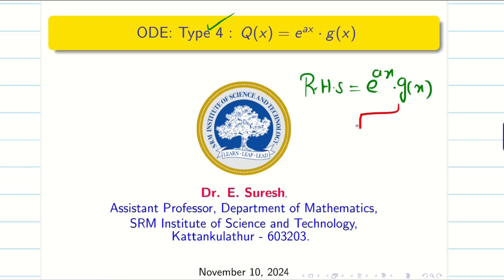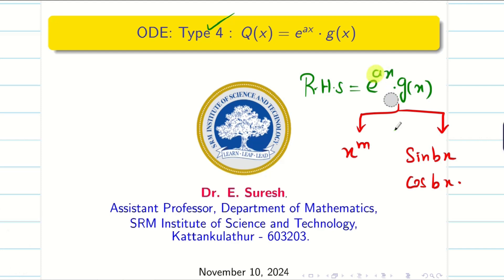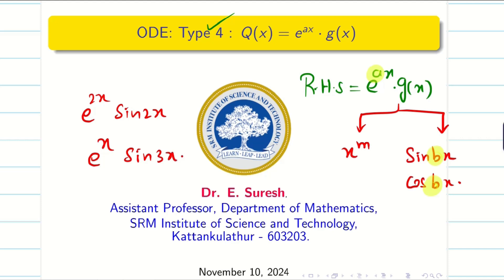Now g(x) has two possibilities. It may be x^m — that is, a polynomial — or it may be sin(bx) or cos(bx). I am using b x here because we are already using a x, so they may be the same or different. For example, you may get e^(2x)·sin(2x) or e^x·sin(3x). That's why I am saying sin(bx) or cos(bx). Let us go into the session.